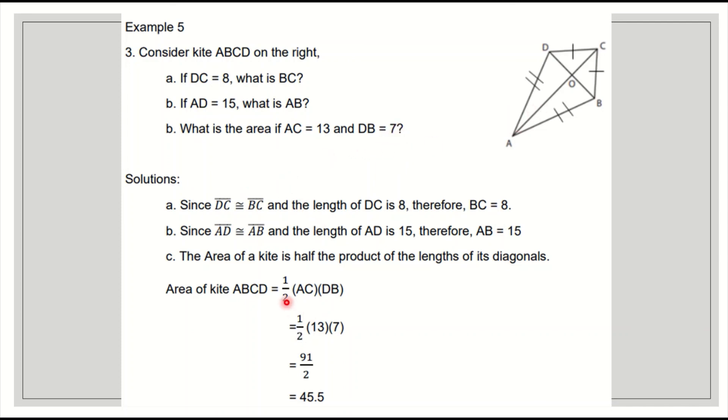What is the area if AC is 13 and DB is 7? The area is one half times AC times DB. So one half times 13 times 7. 13 times 7 is 91, divided by 2 is 45.5. That is the area of the given kite.